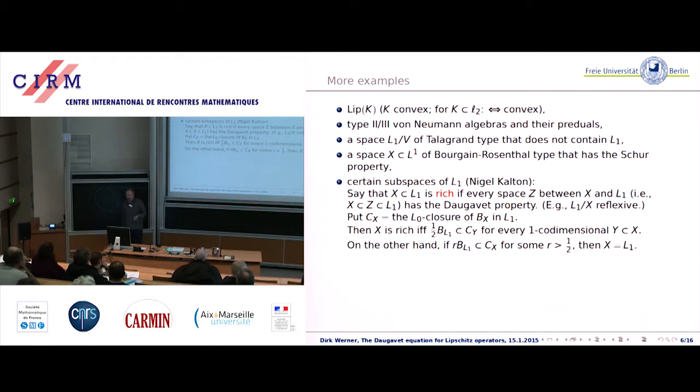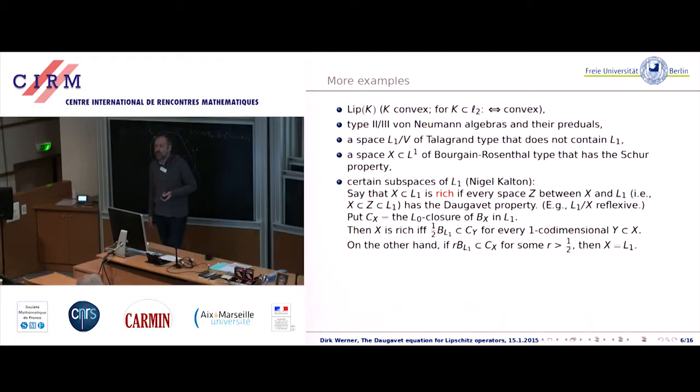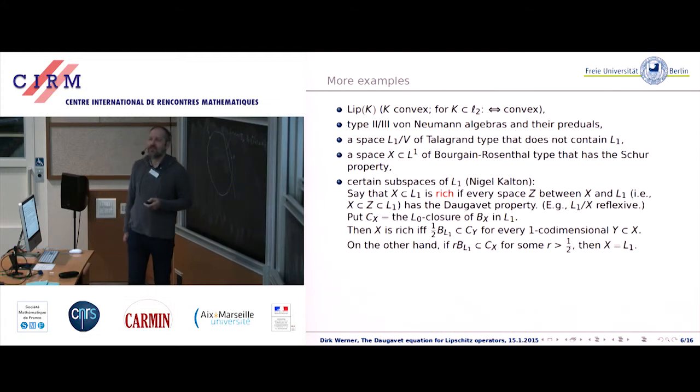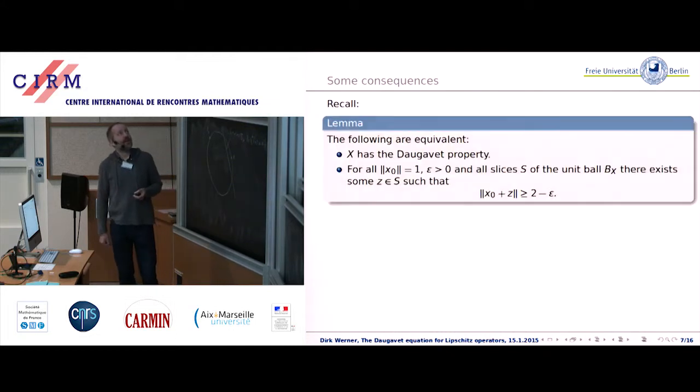This result is contained in a joint paper with Vova Kadets from 2003 and Nigel Kalton, of course. What you cannot read there is Nigel found this theorem or a first version of it roughly two minutes after I told him the definition. Actually this Bourgain-Rosenthal type space is also of a type that Nigel would have liked very much because it's a type of subspace where the unit ball is relatively compact for this topology in measure.